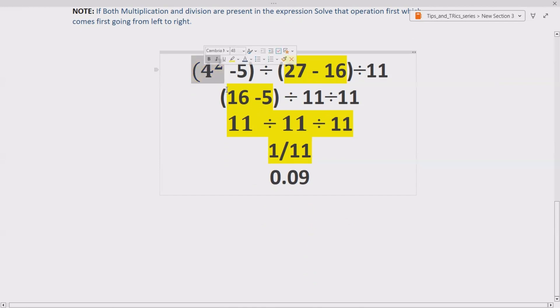So, we have to solve it first. So, we first solve 4 square, which gives 16 minus 5, divided by 27 minus 16 gives 11, divide by 11 as it is. Now here, bracket not completely solved. So, we solve again, 16 minus 5 gives us 11.